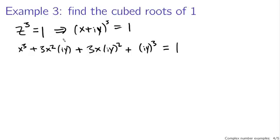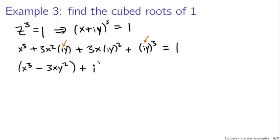Looking at these expressions: we have an iy term, an (iy)² term — that gives an i-squared, which is a minus sign — and an (iy)³ term, giving i-cubed, which is minus i. So we have two complex parts and two real parts. Rewriting: x cubed minus 3xy squared for the real part, plus i times (3x squared y minus y cubed) for the imaginary part.